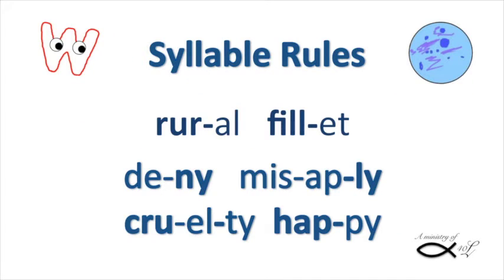Here are some syllable rules that we can apply to Webster. Unaccented syllables often schwa, especially at the beginning or end of a word. The schwa sound usually tends towards short U — 'uh' — but E's often schwa to short I.